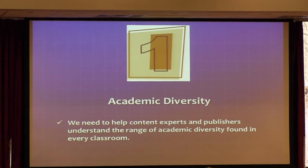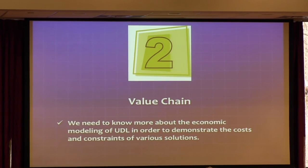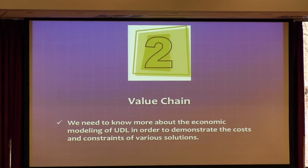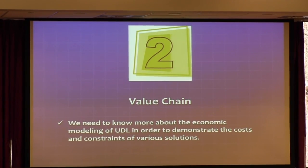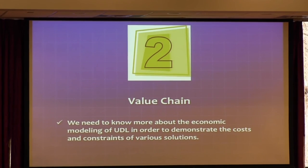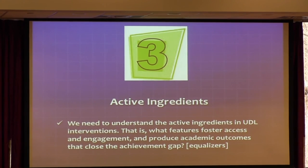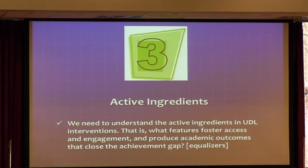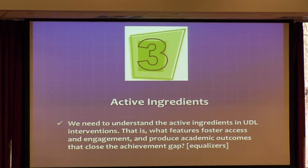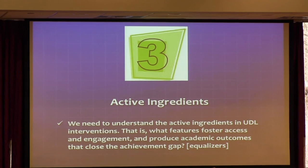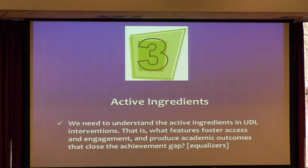If you're teaching secondary school, how big is that range? No wonder we can't close the achievement gap — they can't access, they can't engage, we certainly can't get the outcome. Second is the value chain — we need to know more about economic modeling: if I have limited time and resources, what should I do first, and what does it cost? Third — the active ingredients — what is it about what we're doing? When we say a child needs an iPad, what is it about an iPad that's magical for engagement and translates to learning outcomes? What is it that we have that's so great that's going to close that achievement gap?